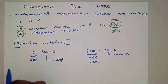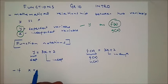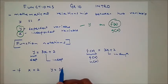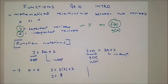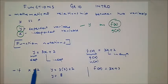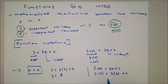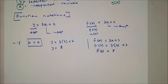Now imagine if x equals 2 — what will y equal? You substitute: y equals 3 times 2 plus 2, which is 6 plus 2, equals 8. That's the relationship. If written as f of x equals 3x plus 2, then f of 2 equals 3 times 2 plus 2, which is 8. So f of 2 equals 8 — that is the relationship we're speaking about.